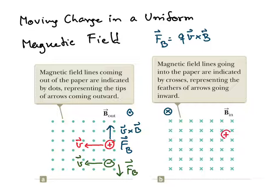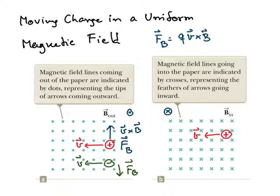Now if the magnetic field points into the screen and you have a positive charge with the velocity vector like this: again, your four fingers point in the direction of V and the magnetic field vector points out of your palm. In this case, your thumb will point downward, and this is the direction of V cross B.